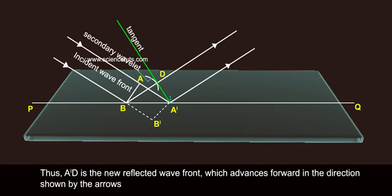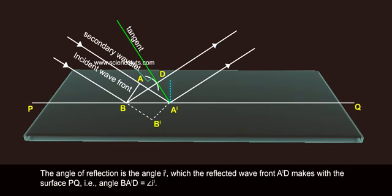Thus, AD is the new reflected wave front which advances forward in the direction shown by the arrows.